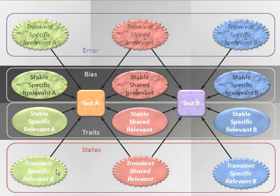To capture all of these different influences in one study would be very difficult — the measurement design would have to be quite complex. For most purposes, we can simplify things quite a bit. We assume that many of these exotic influences, like transient shared trait-relevant influences, are small, and we can treat them as if they are measurement error. But we should always keep in mind the full range of possibilities when we're talking about the validity of tests.